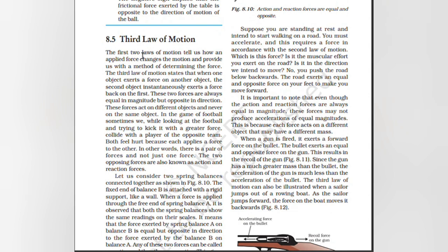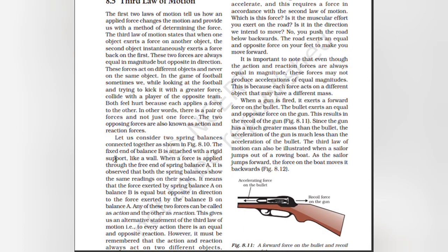Third law of motion. The first and second laws of motion tell us how an applied force changes the motion and provide a method of determining the force. The third law of motion states: when one object exerts a force on another object, the second object instantaneously exerts a force back on the first. These two forces are always equal in magnitude but opposite in direction. These forces act on different objects and never on the same object. In a game of football, if two players collide while trying to kick the ball, both feel hurt because each applies a force to the other — there is a pair of forces, not just one. The two opposing forces are also known as action and reaction forces.